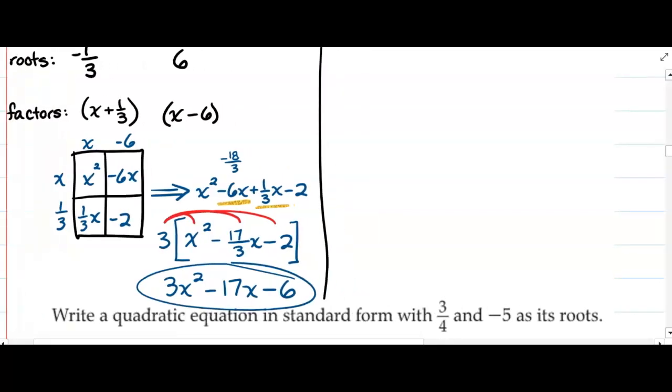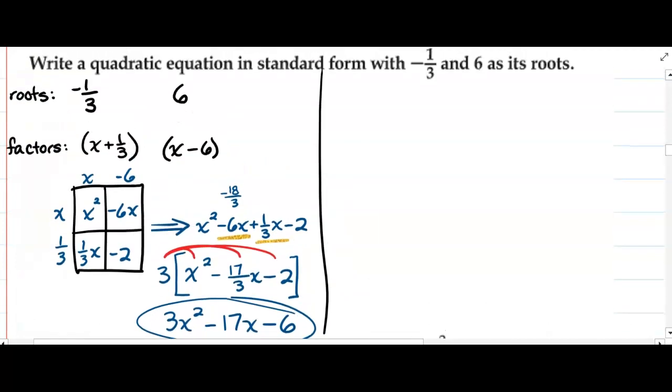Another option, though, it's very similar: we start off with these two roots, negative 1/3 and 6, and we need to write the factors.